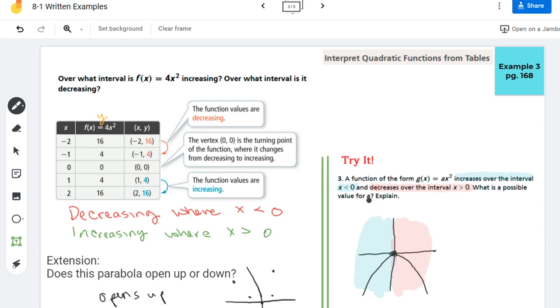So graphs that open downwards, think about that a value. A must be negative. So if I wanted to come up with some possible a values, I could have negative 1, negative 7, negative 3 fourths, negative 32. It doesn't matter what that value is. As long as it's negative, it'll open downwards like you see there. So there we have it guys. That is interpreting quadratic functions from tables. Until next time.